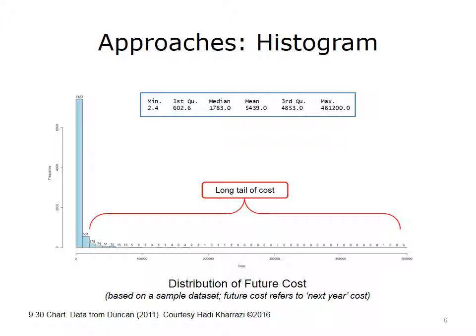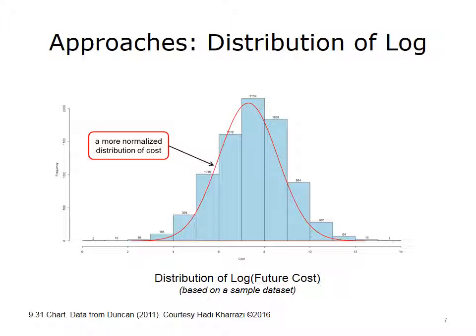This extreme skewness makes the distribution of the data incompatible with the requirements of common predictive methods, such as linear regression models. As discussed earlier in this unit, data transformation is sometimes a critical step to prepare the data for analysis and modeling. Due to the skewness of cost data, the cost data is being transformed by a log function. When cost data is log transformed, the cost data becomes more normally distributed, thus making it more suitable for methods such as linear regression that require such distribution in the underlying data.